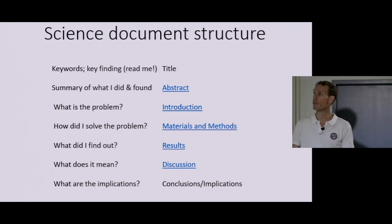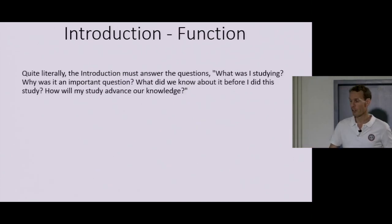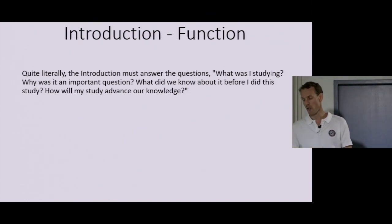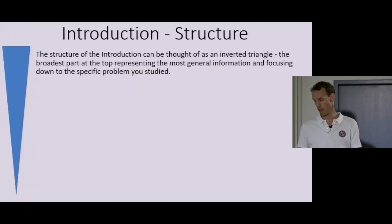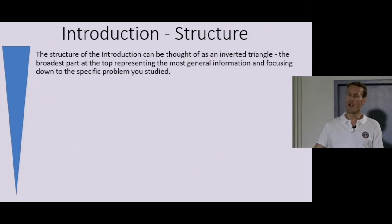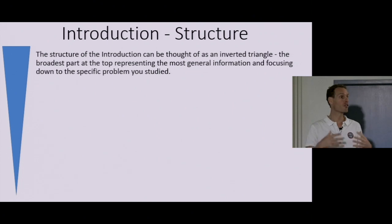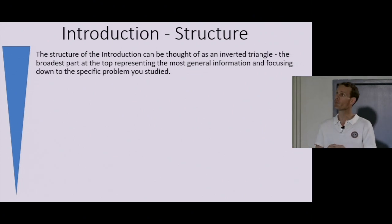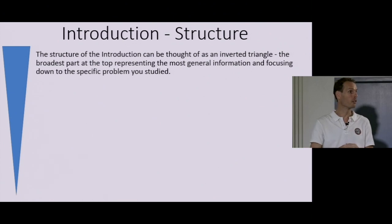Let's move on and talk a little bit more about the other classical sections of a science paper. The introduction — its function is quite literally answering the questions: What was I studying? Why was that an important question? What did we know about it before I did this study? And how will my study advance our knowledge on this? There's a pretty simple idea to apply to an introduction: it's called the inverted triangle, where the broadest part — where you start writing — represents the most general information for non-specialists. As you go further down, you get into the context and details of the field, focusing on the specific problem that you studied.